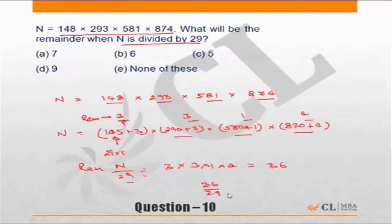Divide 36 by 29. 36 by 29 implies a remainder of 7.